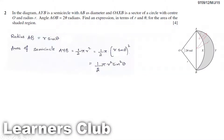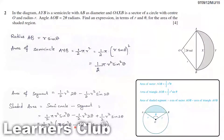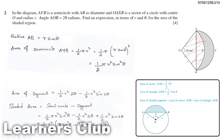This gives us the area of the semicircle — that shaded part. Now we need to find the area of the sector. The formula for the area of a sector is ½R²θ. And the area of triangle AOB is ½R²sin θ.